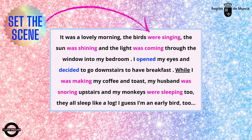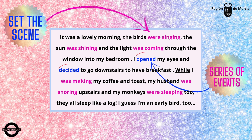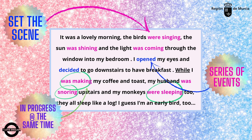You see, I used past continuous to set the scene of the story. I opened my eyes and decided to go downstairs to have breakfast — I used past simple for actions that follow one after the other to move the action forward. While I was making my coffee and toast, my husband was snoring upstairs and my monkeys were sleeping too — I used past continuous for things that are in progress at the same time.